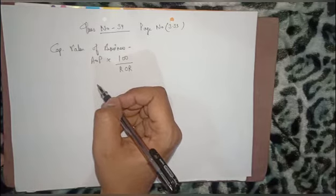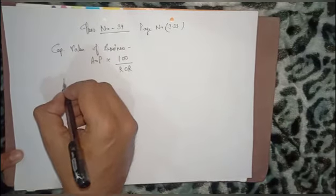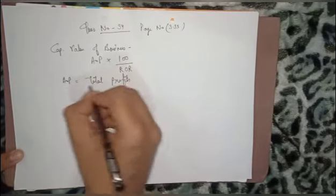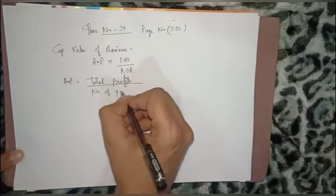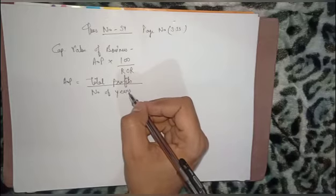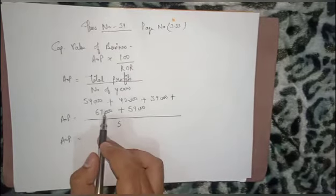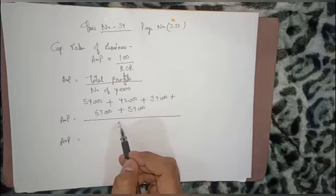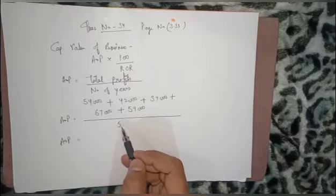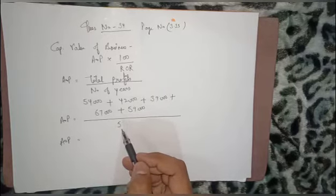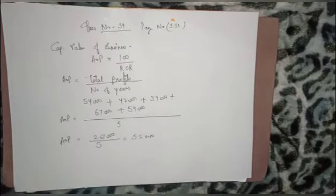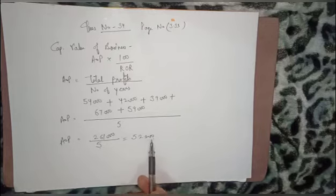Average profit is not directly given, so we have to calculate it. The formula for average profit is: Total Profits ÷ Number of Years. I have written all the years' profits here and divided by 5, because there are five years — similar to the class mean formula: sum of observations divided by number of observations. When you add all the profits and divide by 5, you get the average profit of 52,200.